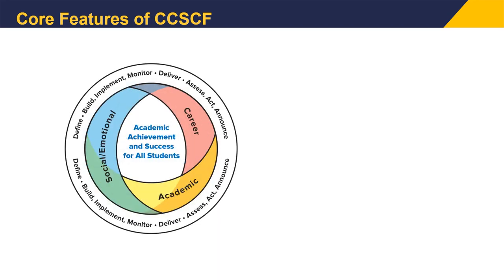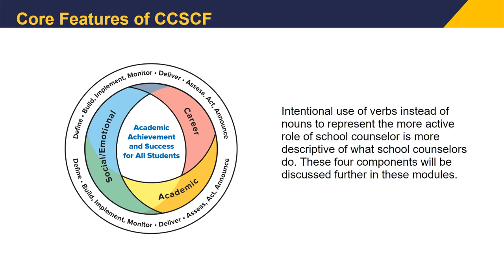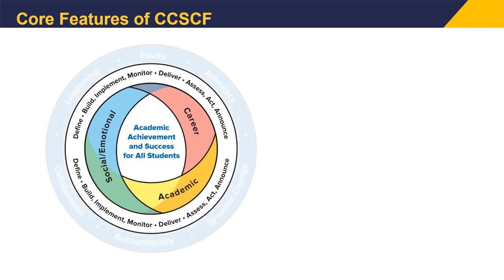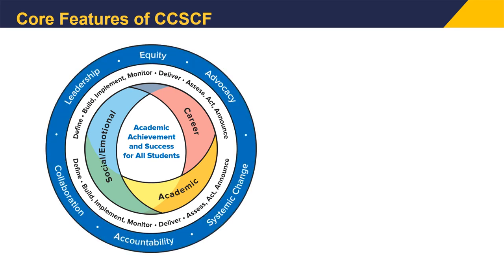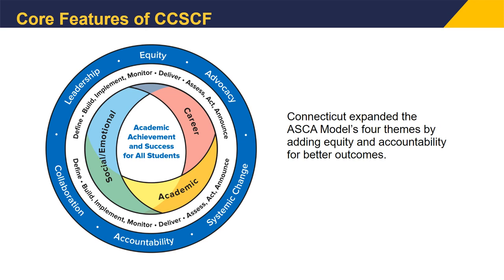Through the deliberate implementation of the framework components — Define, Build, Implement, Monitor, Deliver, Assess, Act, Announce — we can see the core work of the school counselor evolve. Intentional use of verbs instead of nouns represents the more active role of the school counselor. These four components will be discussed further in these modules. The themes of leadership, equity, advocacy, collaboration, accountability, and systemic change are woven throughout the CCSCF and are integral elements of a comprehensive and systemic approach. Connecticut expanded the ASCA model's four themes by adding equity and accountability for better outcomes.